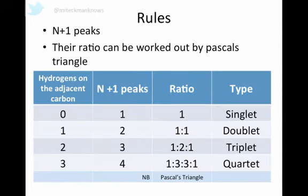The peak will split into N+1 peaks, where N is the number of hydrogens on the adjacent carbon. So if there's no hydrogens on the adjacent carbon, it splits into one. If there's three, it splits into four. The ratio will be worked out by Pascal's triangle. If you don't know what Pascal's triangle is, it is this one here. You have one going all the way down, and then each number below is given by adding the two numbers above it. So two is one plus one, three is one plus two, etc. And there's ones that go all the way down.